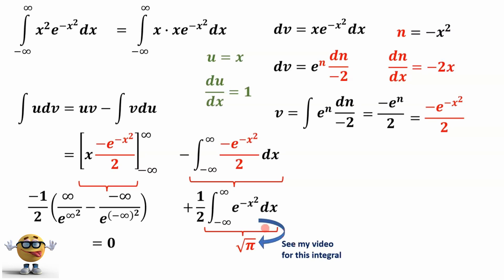Actually, this is equal to the square root of pi. Just check out my video for this integral. Again, it's short, it's like a couple minutes long. We have the one half and the root pi, so this integral evaluates to root pi over 2. And that's our integral right there. So the integral of x squared times e to the negative x squared dx from negative infinity to infinity is square root of pi over 2.